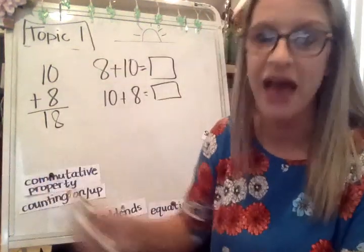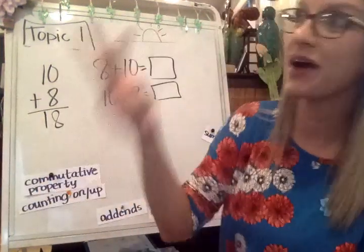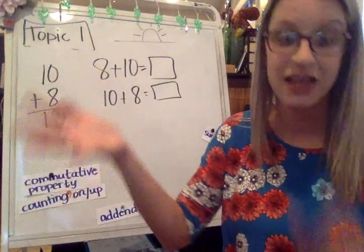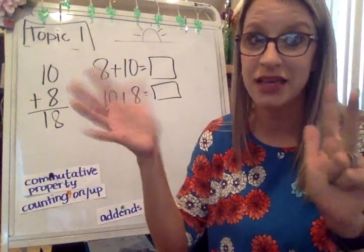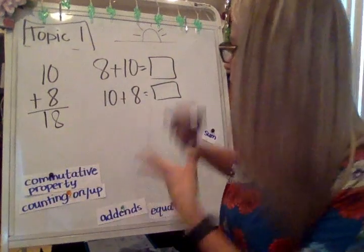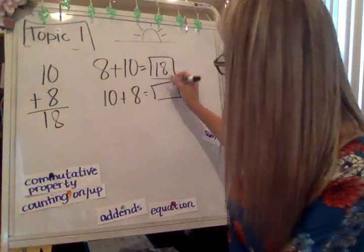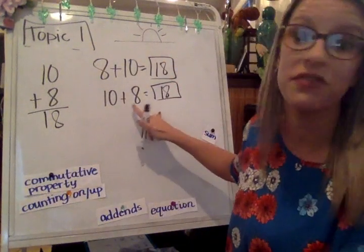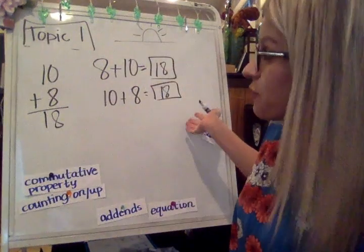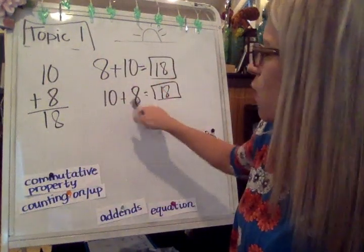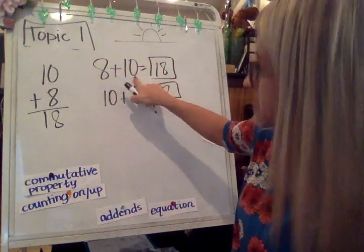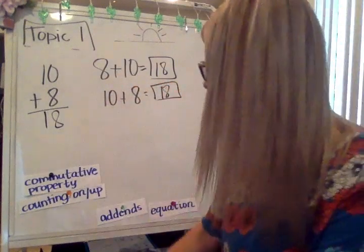Sometimes it might be easier for you to look at it this way. 0 plus 8 is 8, and 1 plus no 10s is 110. But for this purpose, you also want to kind of be thinking about the counting on. So I just ended up changing it around to be 10 plus 8. The commutative property says that I can do that. So I just want to start with that bigger number, the 10, and I'm going to add 8 onto that. So 10, 11, 12, 13, 14, 15, 16, 17, 18.